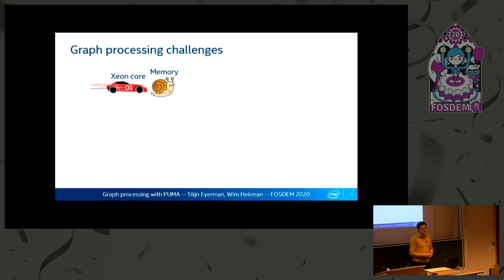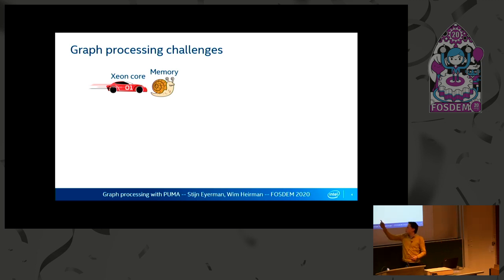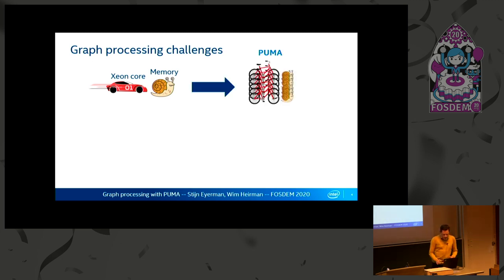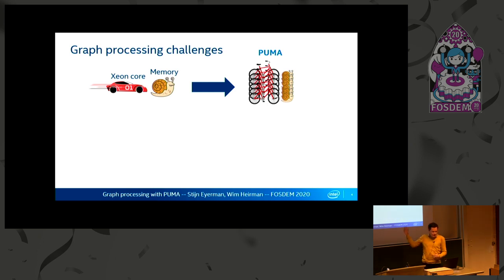Most graph applications are very memory bound. If you have a very fast core, like a Xeon core, it's just stuck waiting for slow memory — you cannot use all of its speed. So instead, in PUMA, we have much lighter, much slower cores, but we have many of them. They still wait for memory, but because we have many of them, the total throughput is higher.